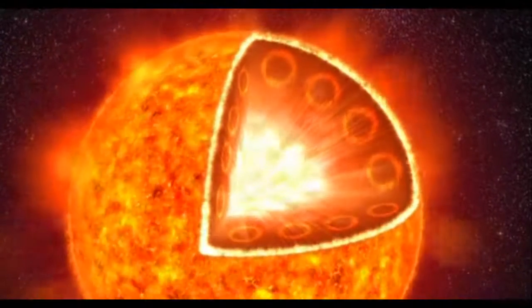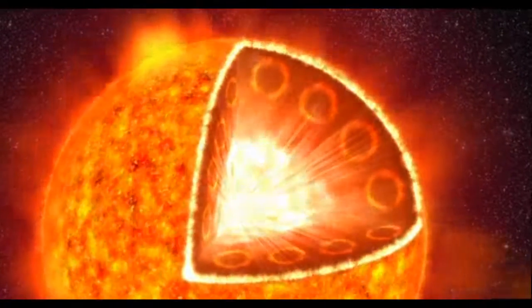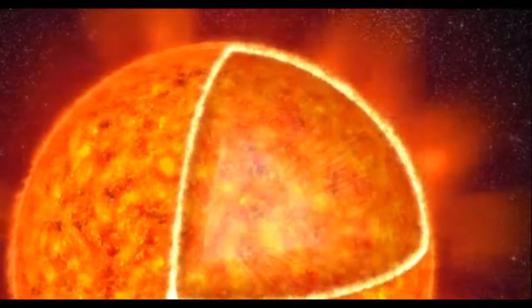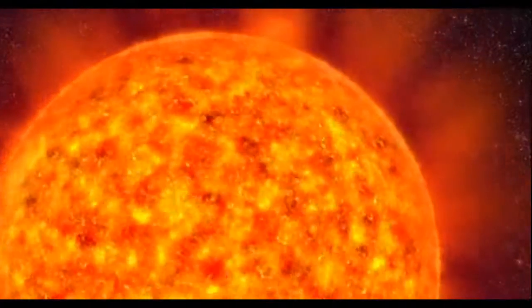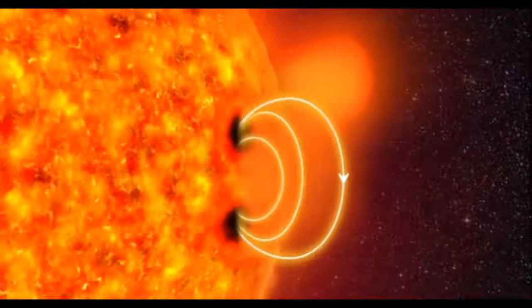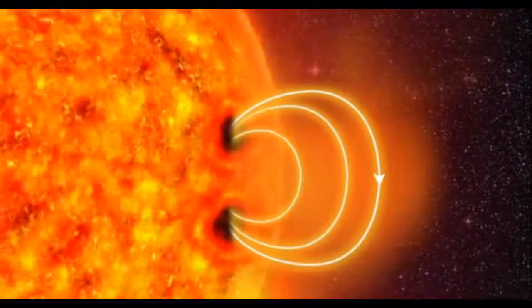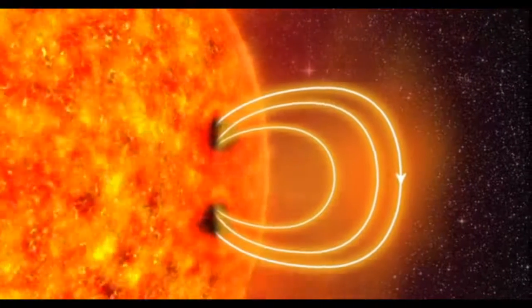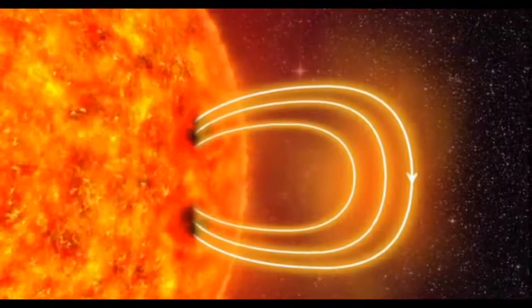These electrical currents of charged gas create magnetic fields inside the sun. In some places, strong magnetic fields push their way up through the surface. They slow down the eddies of hot gas. The surface cools, and darker sunspots appear.